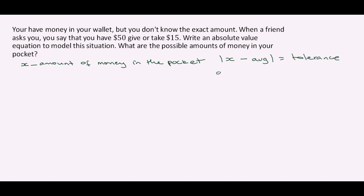In this case, our average is our guess, which is $50, and our tolerance is $15 because we said give or take 15 — that's the wiggle room, that's your tolerance. So we write our equation: |x minus 50| equals 15.